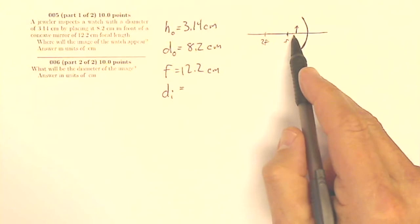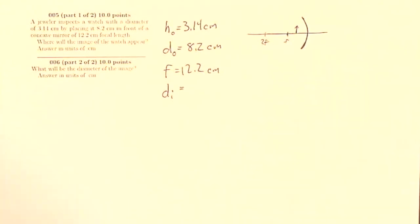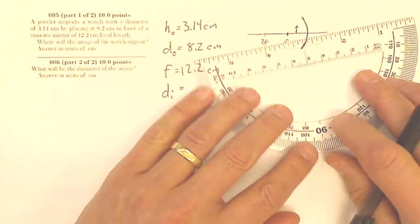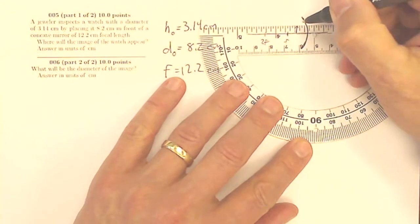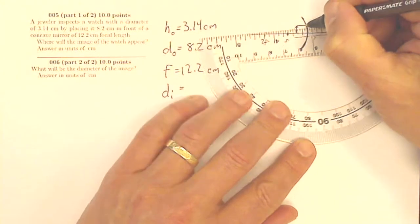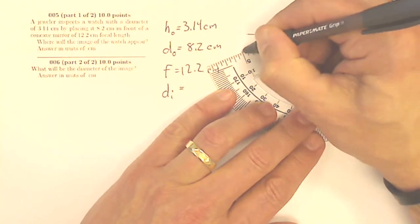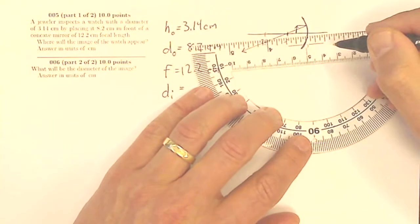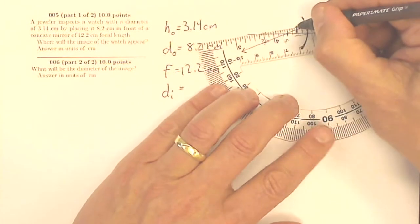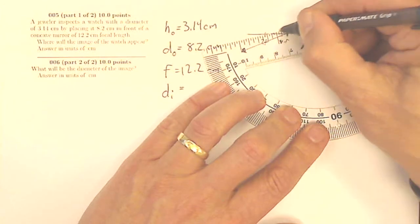If I were to draw myself a ray diagram, what I would get out of this is, I'm going to pull out my little protractor and do just a quick sketch. So in parallel, out through F, in through 2F, out through 2F.